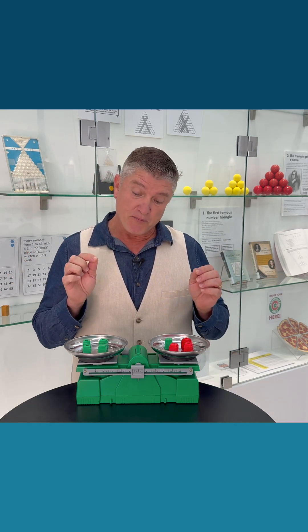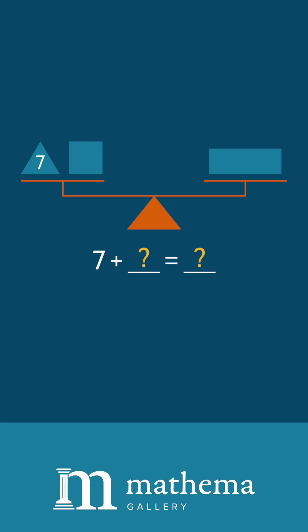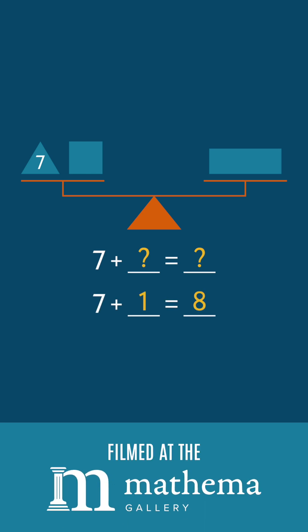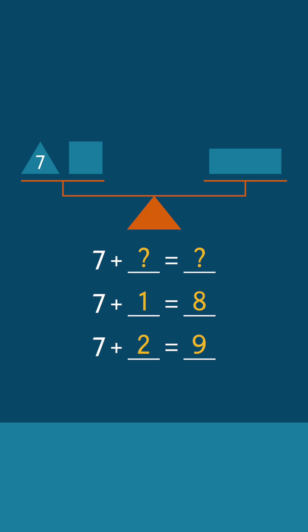Moving forward, students can represent pictures, like pan balances and cubes, using symbols in equations. And eventually, they can start looking for patterns as the variables on each side of the pan balance are changed.